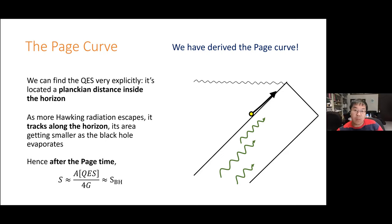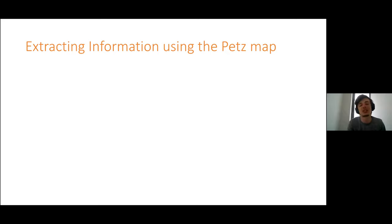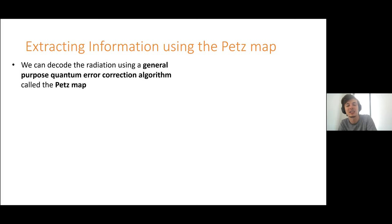After the page time, the entanglement entropy is actually given by the area of this special surface over 4G — almost exactly the Bekenstein-Hawking entropy of the black hole. So that gives you the page curve. I want to talk very quickly about the Hayden-Preskill result, and also about more experimental quantum computing applications — there's a general purpose set of techniques for doing quantum error correction using the island formula that you can use to figure out what information is in the radiation.